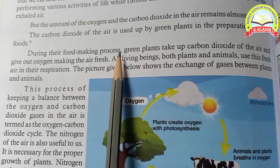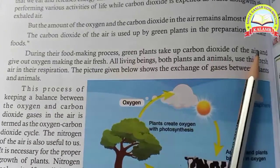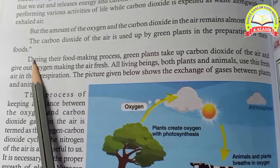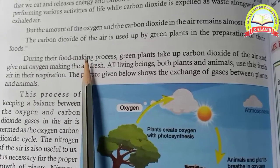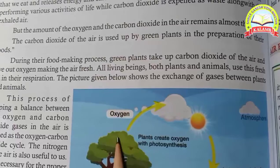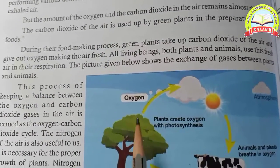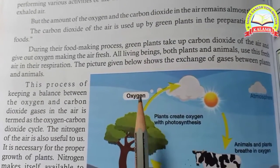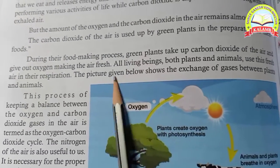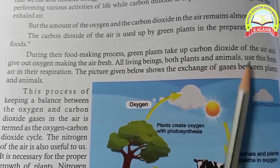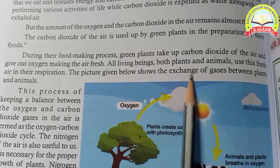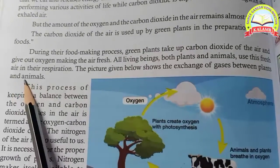During their food making process, green plants take up carbon dioxide from the air and give out oxygen, making the air fresh. The process involves carbon dioxide going into plants and oxygen coming out. All living beings, both plants and animals, need fresh air for respiration. The picture given below shows the exchange of gases between plants and animals.